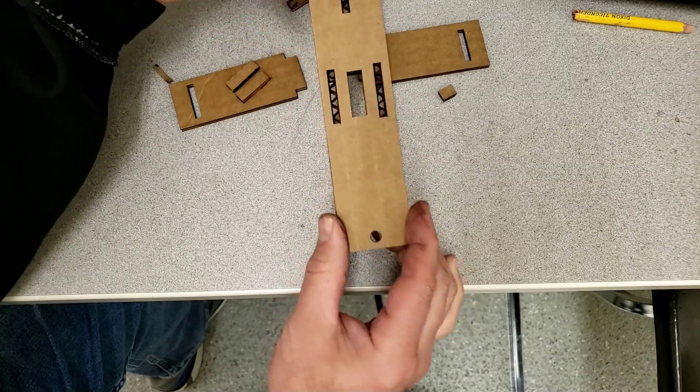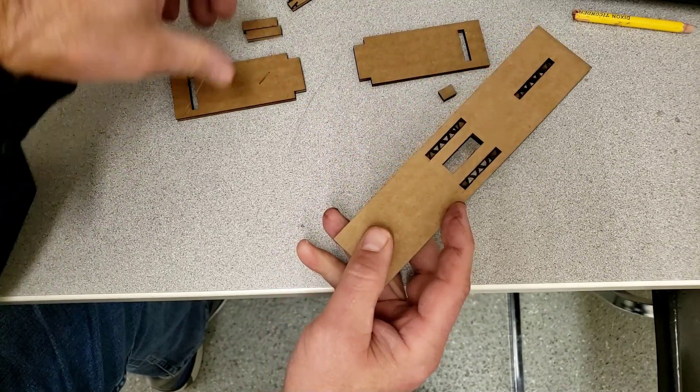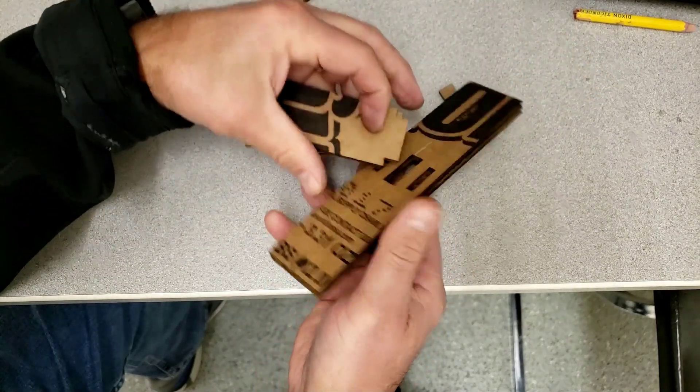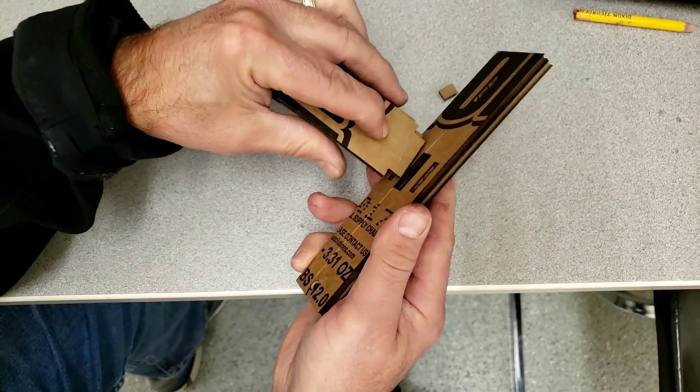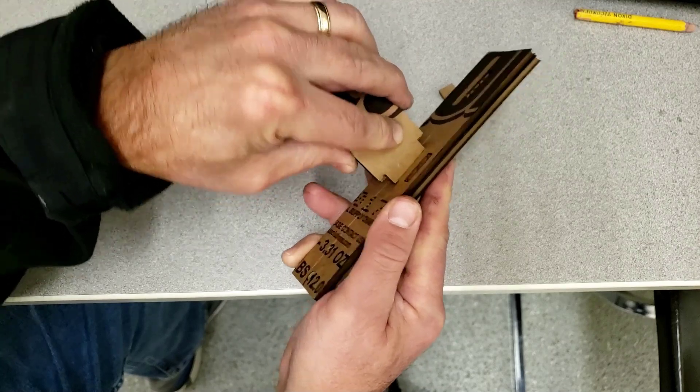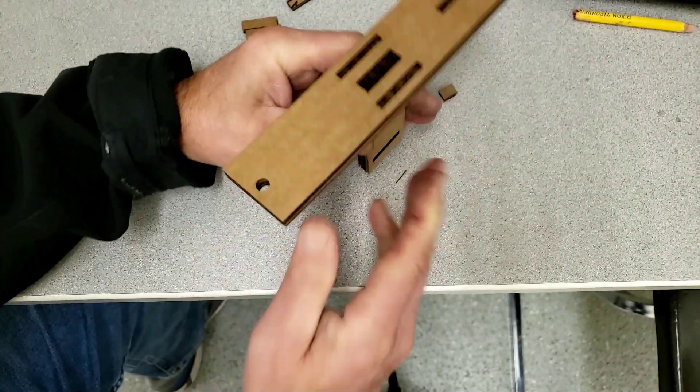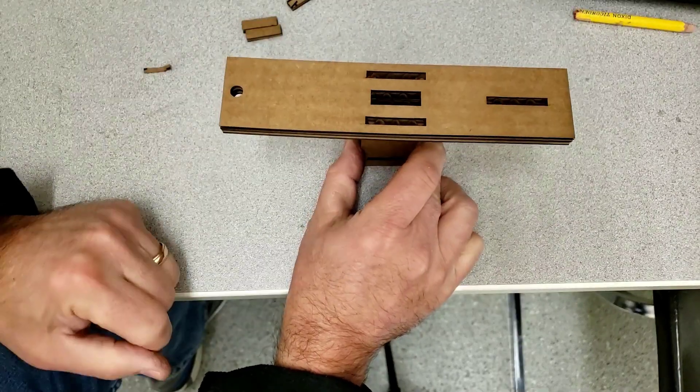If yours are not snug enough, you can add a little bit of glue, but I think mine are going to be fine. And then these two just go together and slide in from the bottom up. And that, my friends, is a launcher.